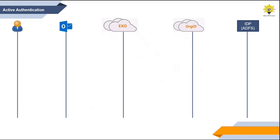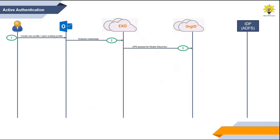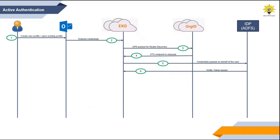Let's understand the active authentication flow. The user is trying to create or open an existing Outlook profile, enters credentials, and those credentials are passed to Exchange Online. Exchange Online passes the user principal name to org ID for realm discovery. Org ID checks the domain name of the user UPN and returns the STS endpoint to Exchange Online — that is the ADFS server's STS endpoint. Then Exchange Online passes the user's credentials to the ADFS server on behalf of the user, and the ADFS server issues a SAML token to Exchange Online.